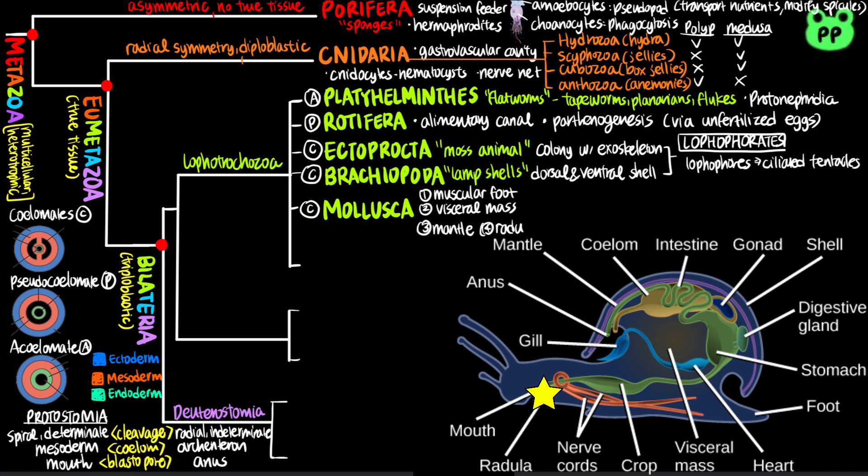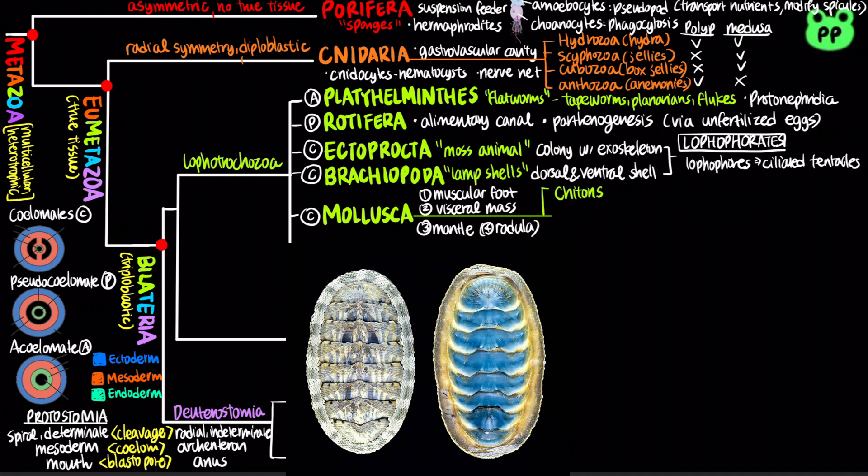Many mollusks also contain a radula, which is a strap-like organ used for feeding. There are four main classes of mollusks. Chitons are marine mollusks with an oval-shaped body and a shell composed of eight dorsal plates.